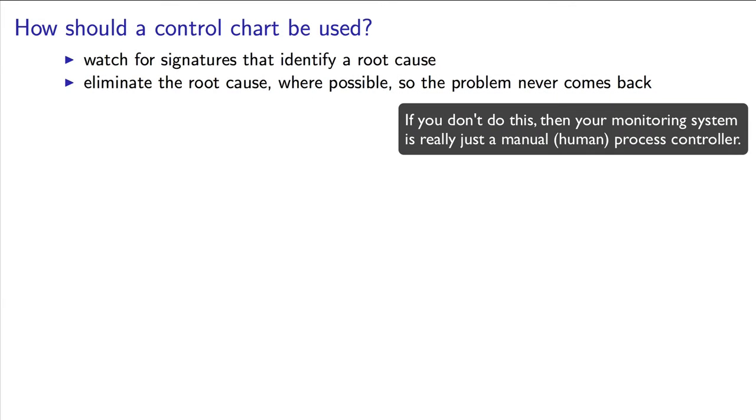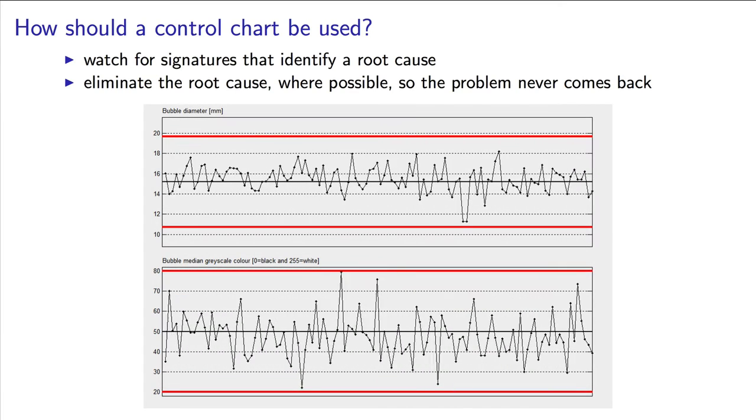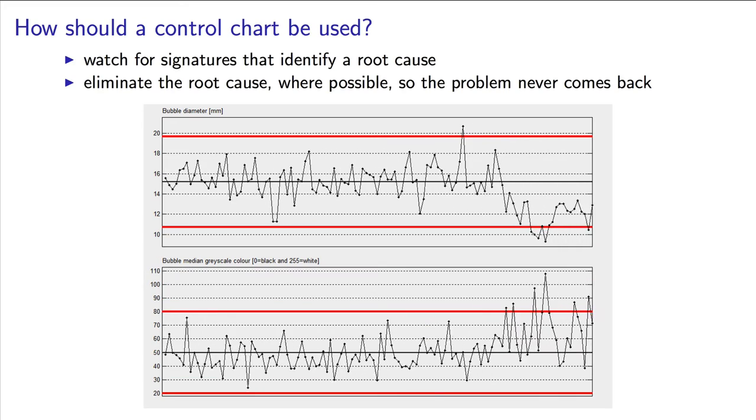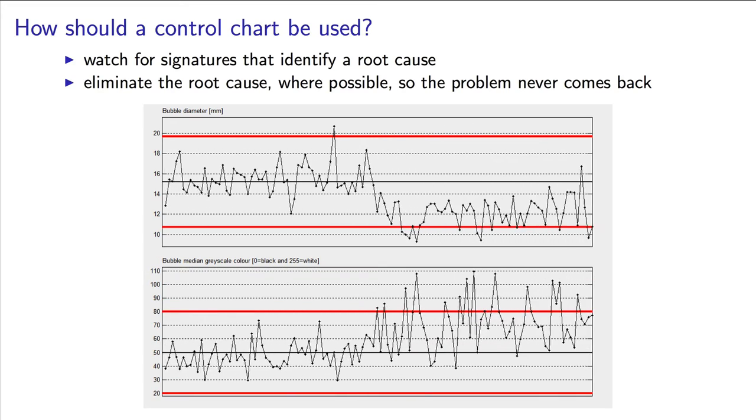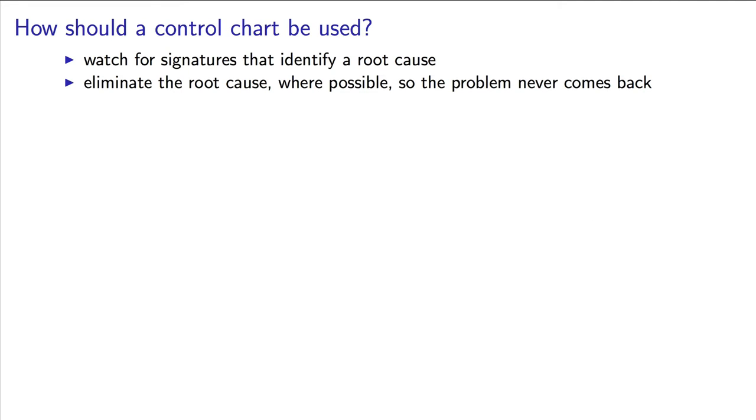Actually, in the prior example that I showed you, with the froth monitoring, the operators noticed the signature of the bubble size decreasing and the color increasing. In an ideal world, they would figure out what causes this and prevent it from ever reoccurring. Actually, in this situation, it was a function of the property of the raw material, the ore coming out of the ground, that periodically changes. So this is something that they cannot change, really.